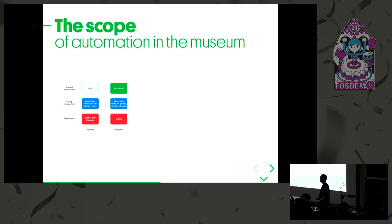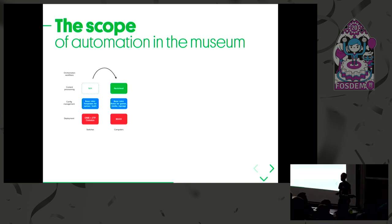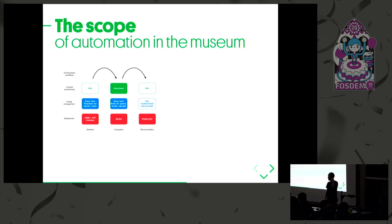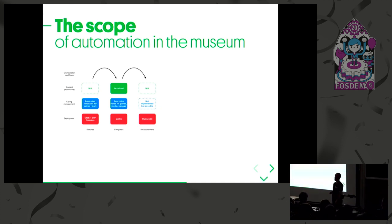Based on that we also do orchestration workflows — for example, in one workflow we configure a network port for a specific device in the museum, deploy the computer from scratch with Ubuntu Linux, apply all the specific roles for that computer and its content, and at the end of the process you have a fully functioning installation. We also manage microcontrollers running Arduino — we selected Platform IO to deploy firmware. We typically have a computer with an Arduino microcontroller connected via USB, so firmware deployment is part of the overall deployment process.